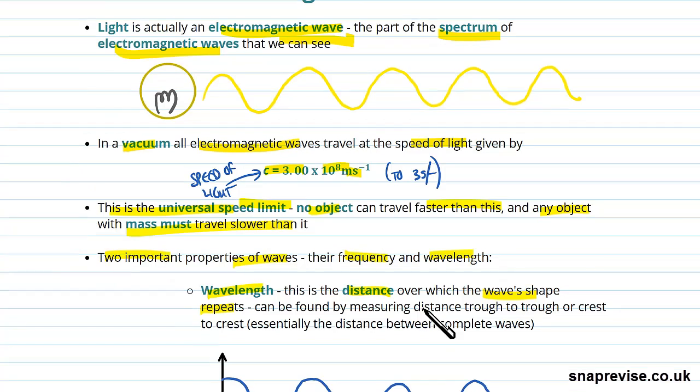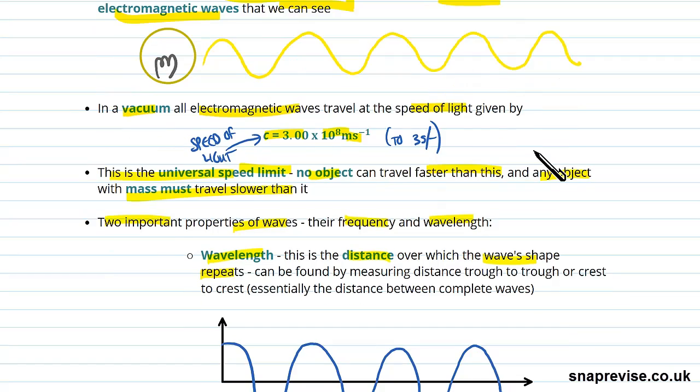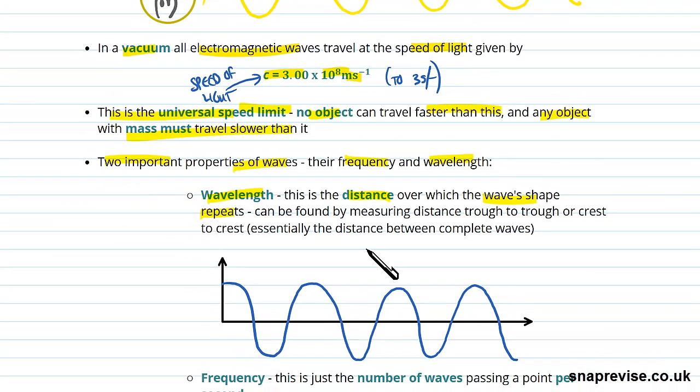So this is the kind of standard layout for a wave, as in this is the standard shape we choose to draw it. And so the wavelength is the distance over which this shape repeats. How do we find this distance? Well, we can find it just by measuring the distance from trough to trough or crest to crest. That means from the bottom to the bottom, or from the top to the top. But really, any place you pick such that the wave shape repeats is good, but the reason you pick trough to trough is it avoids you accidentally making mistakes. But it's basically just the distance between complete waves.